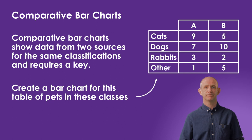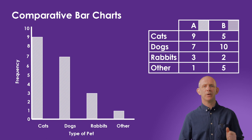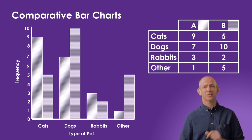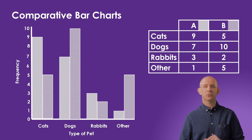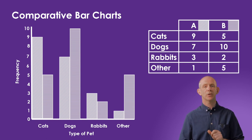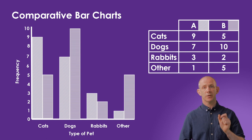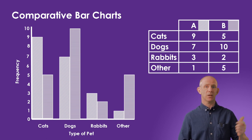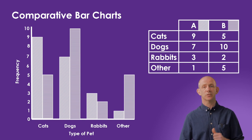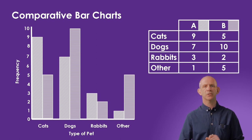Next we'll create a comparative bar chart to show data from two sources. We can use the same classification since we're comparing the previous class's data with another class's data on the same topic, and the same scale works as the largest piece of data is still 10. Since we're plotting data from each class as a bar within the same category, we need a key to differentiate between the bars. The bars within each category should be placed together but leave a gap between categories. Class B had: 5 cats, 10 dogs, 2 rabbits, and 5 others.